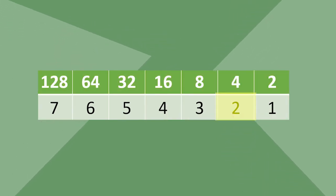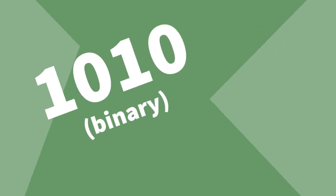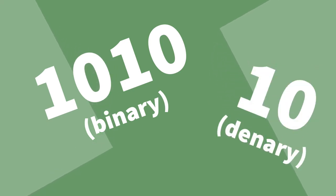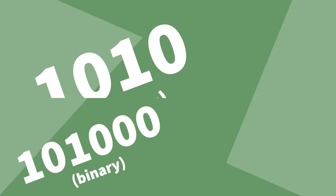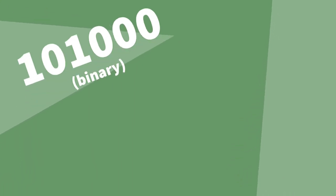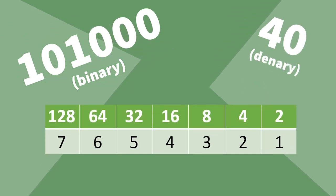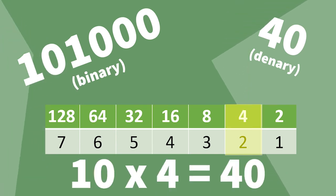So a binary left shift of 2 is multiplying by 4. For example, here's 1010 in binary, or 10 in denary. Let's do a left shift of 2. We end up with 10100, which is 40. You can see from our table, a shift of 2 is 4 — 10 times 4 is 40.